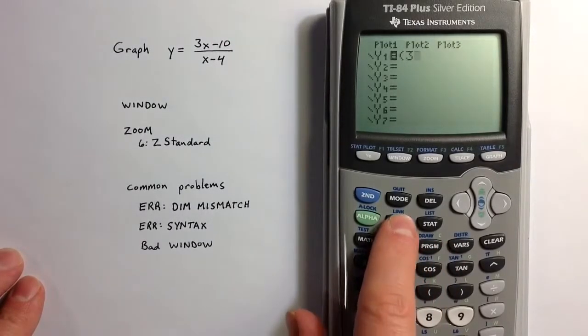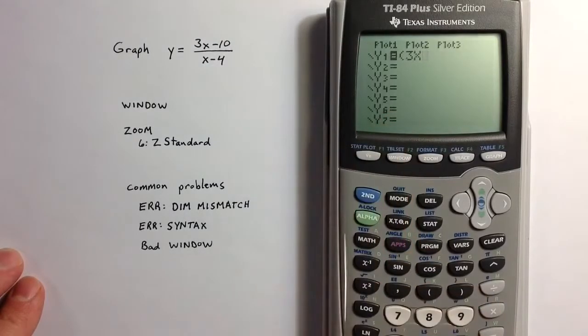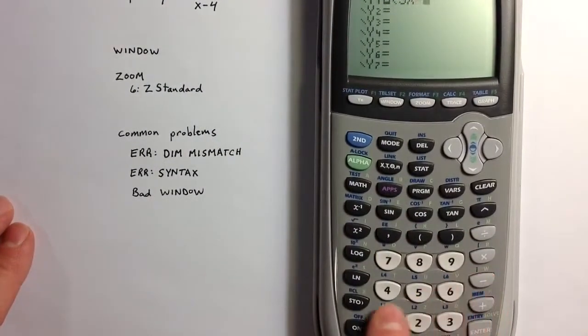We'll enter an x onto the calculator, and so I can hit that to enter 3x, and then the subtraction key minus 10.